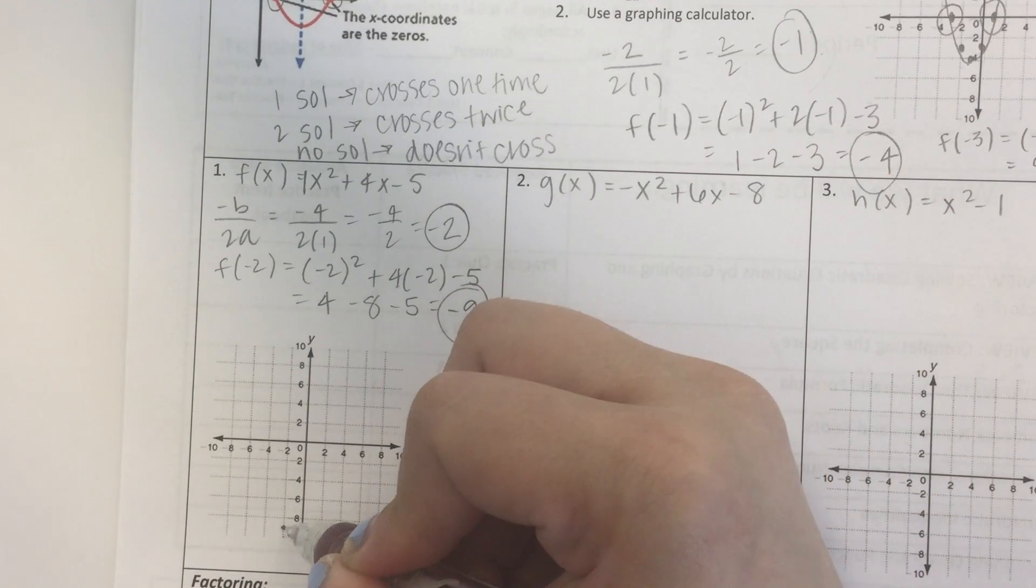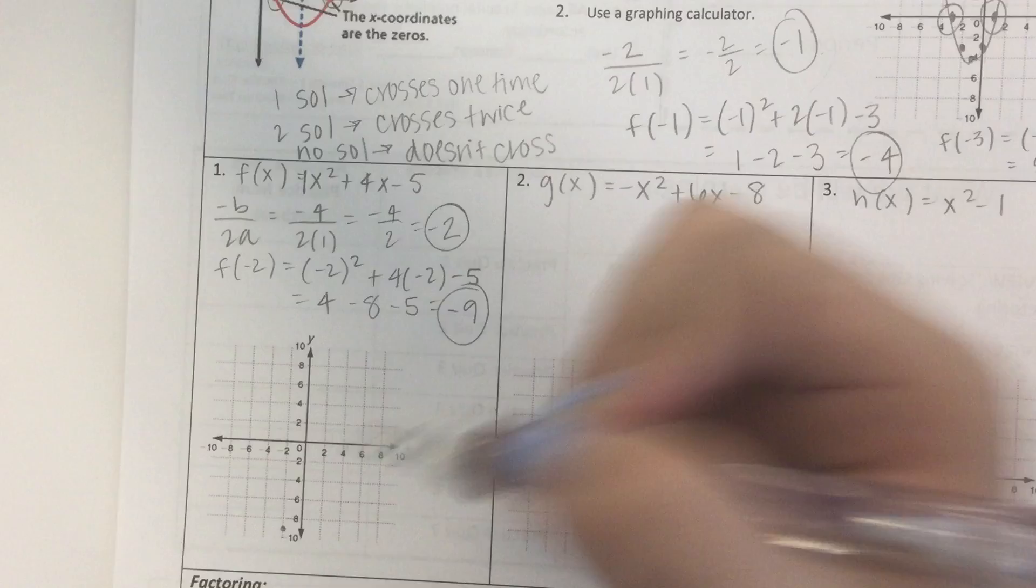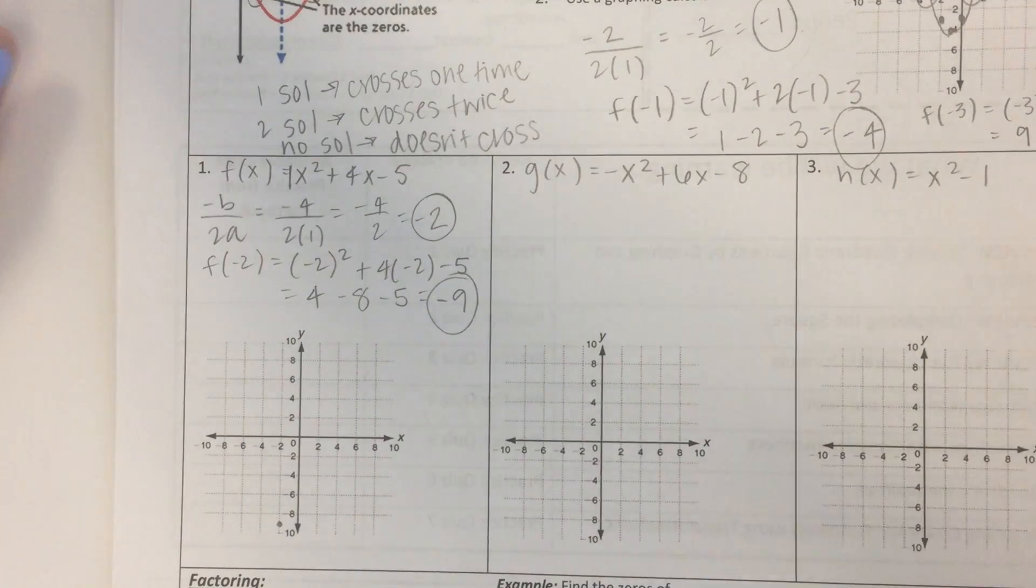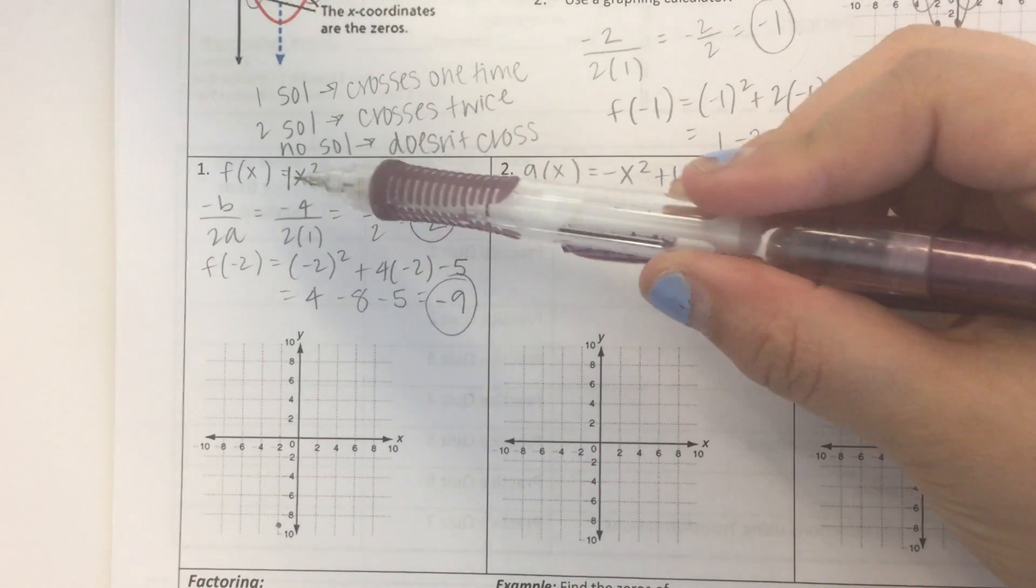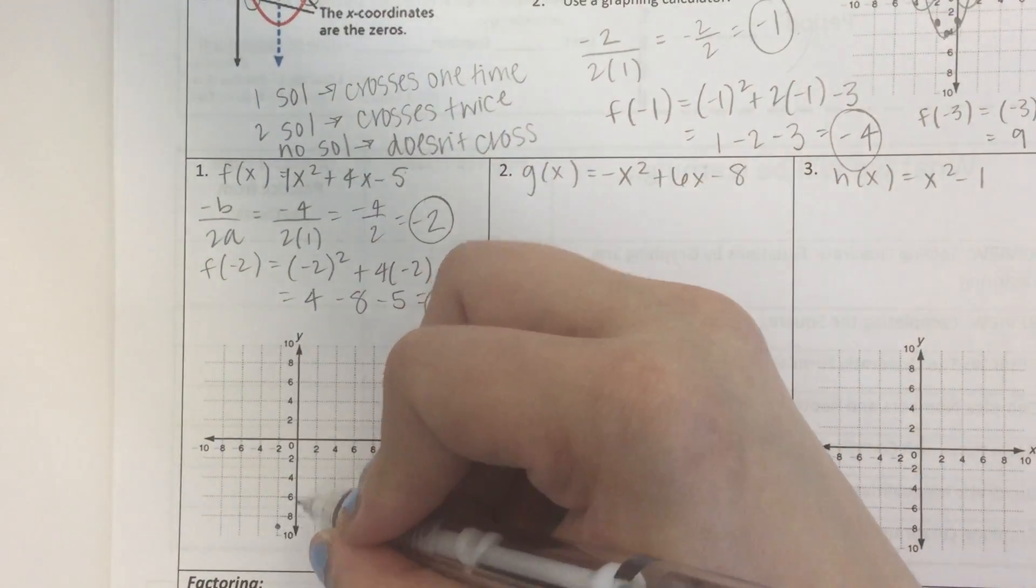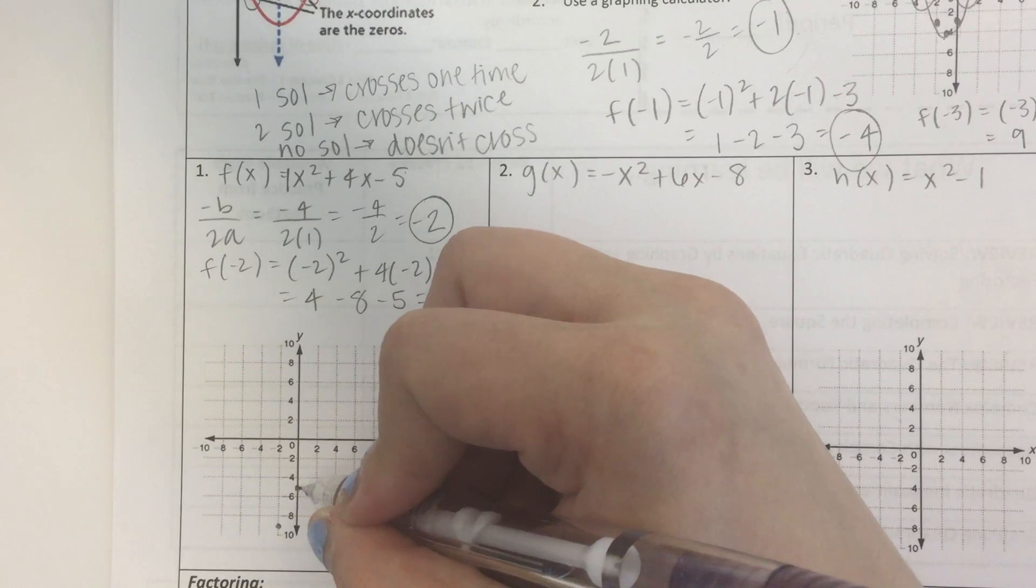Negative 2, negative 9, way down there. Now remember, the next step is to find the y-intercept. All we have to do is imagine there are no x's, because if we plug in 0, the x's go away. So if we go 0 plus 0 minus 5, we get minus 5.